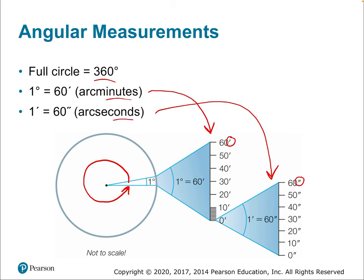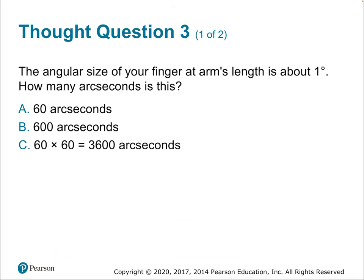How many arc seconds are there in one degree? Since there are 60 arc minutes in one degree and 60 arc seconds in one arc minute, it's 60 times 60, which equals 3,600. There are 3,600 arc seconds in one degree.